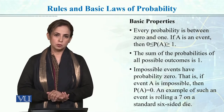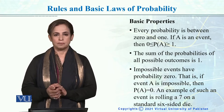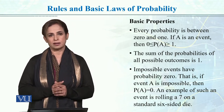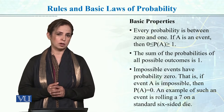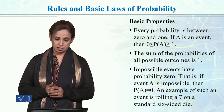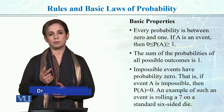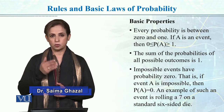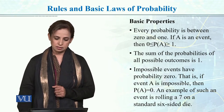Let's go through some basic rules and principles of probability. Probability always ranges between zero and one, where one means an event will definitely occur and zero means it will not occur at all. For example, if we toss a fair coin, there is zero probability the coin will land on its edge. If we roll a die, the probability of getting 7 is zero.